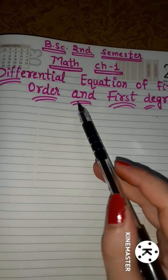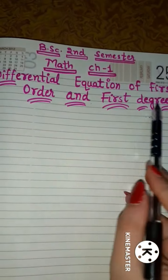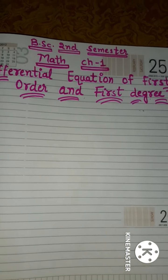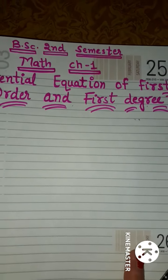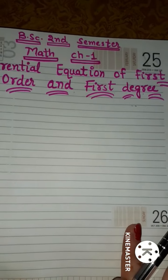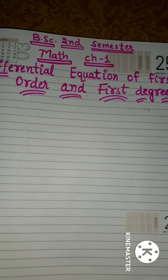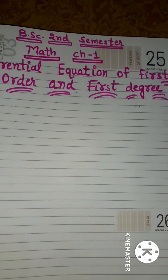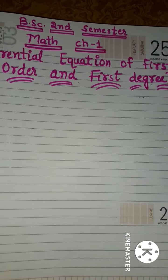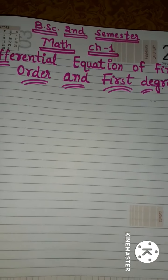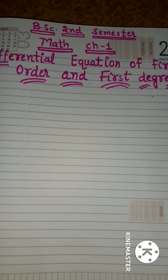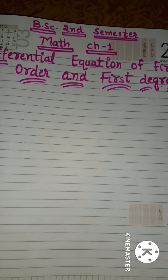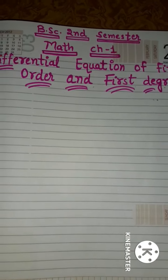अब बात करते हैं first order and first degree की। यह 12th का concept है, आप सब पढ़कर आए होंगे कि order और degree क्या होते हैं, लेकिन फिर भी एक बार remind करा देती हूँ। Order of a differential equation होता है the order of the highest derivative in the equation.